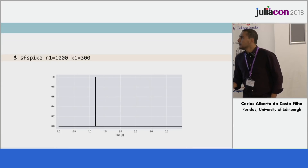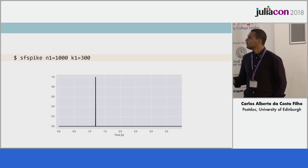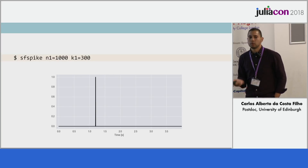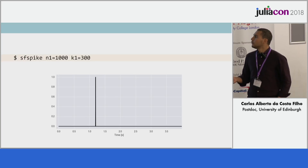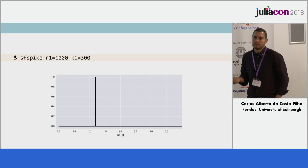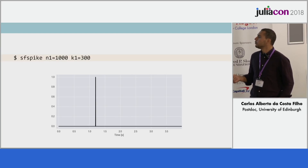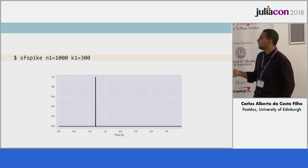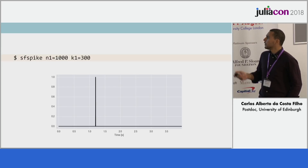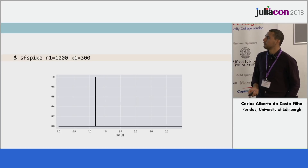Madagascar has a bunch of different programs. For example, there's SF spike. These programs are run in the command line — you call SF spike, give it some options, and every program has its different options. This one in particular generates what we call a spike, which is a bunch of zeros except at sample 300, where it puts a one. This is what we would get if we plotted the results of SF spike.